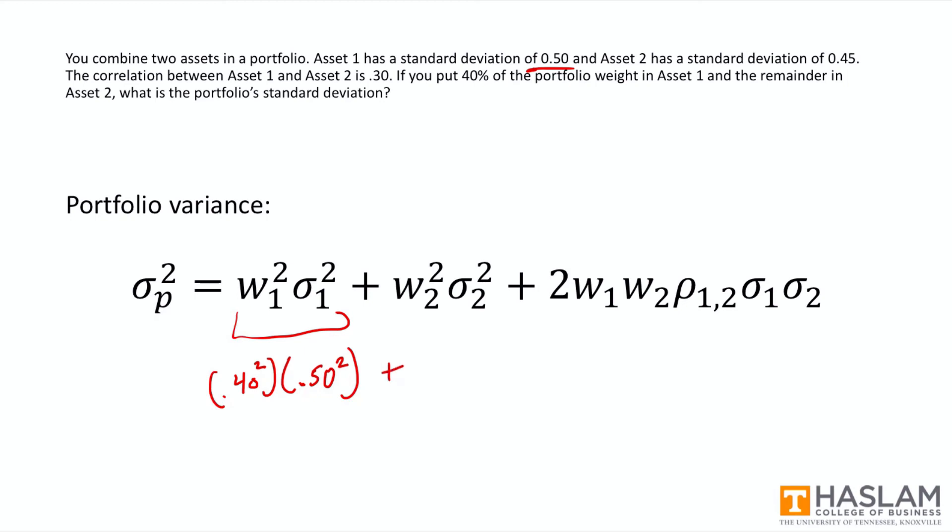And then for the second term, we'll follow the same framework. So we need a weight squared times a variance. Again, you're given a standard deviation, so you need to enter 0.45 squared. And then you'll add this last term. So it's two times the product of the two weights times the correlation times the product of the two standard deviations. So we have 0.5 times 0.45.